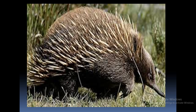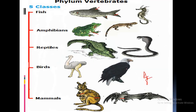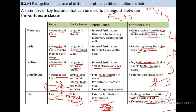The echidna, or spiny anteater, is an egg-laying mammal. It shows all the features of mammals — it has external ears and all mammalian traits — but it lays eggs. That is all for today. Your homework is to write down the features of all the classes of vertebrates with two examples of each.